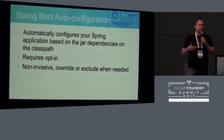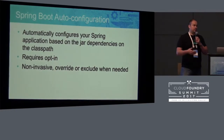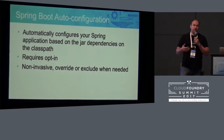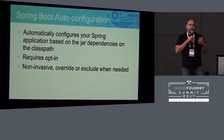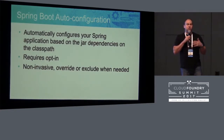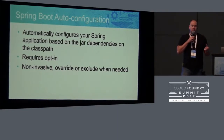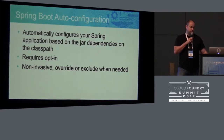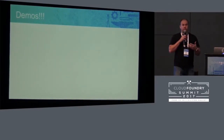Spring Boot auto-configuration: you do have to opt in — this is up to you as a developer to choose to use this capability. What it does is look at the JARs on your classpath and determines at runtime what it should do based on seeing that JAR. If we see an Azure Document Database JAR on our classpath and have some code that's going to interact with that service, it will automatically configure that Spring bean for us. These are non-invasive — you can override the properties, and you can also exclude dependencies. It's just simple annotations on your class.